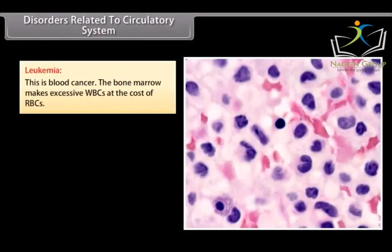Leukemia: This is blood cancer. The bone marrow makes excessive WBCs at the cost of RBCs.